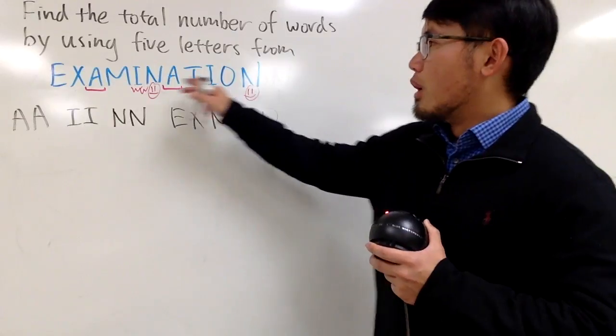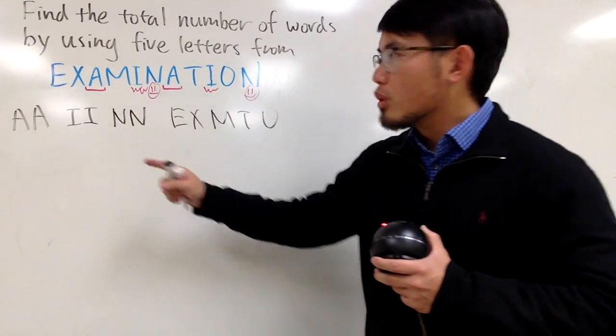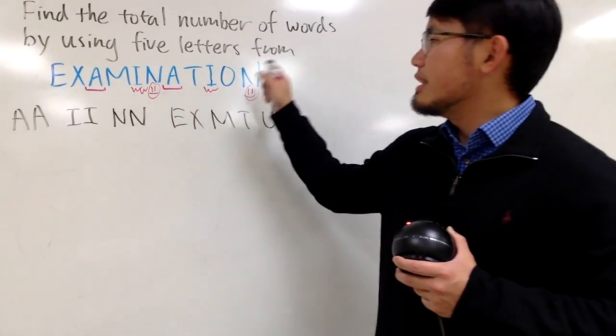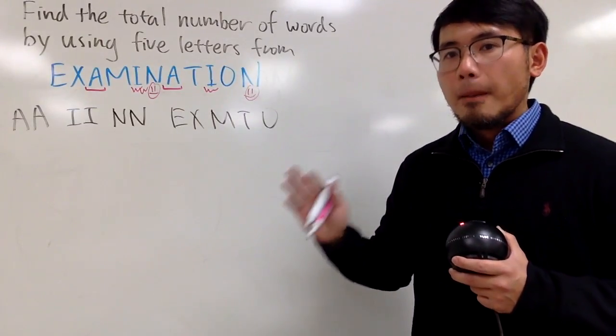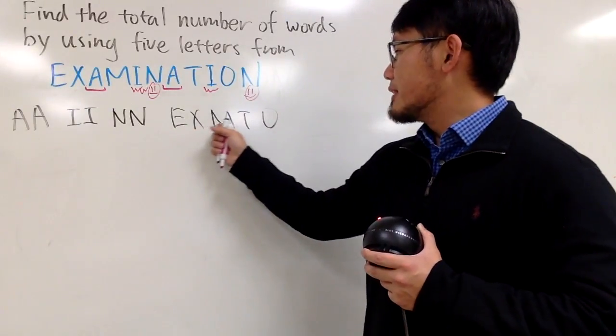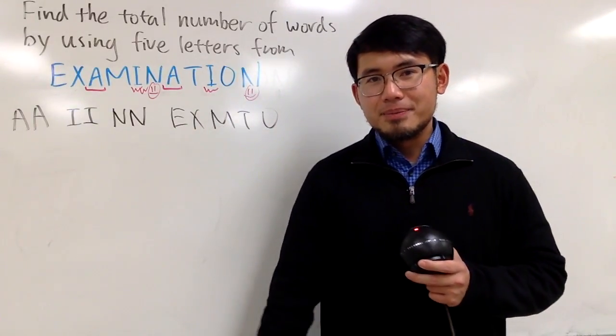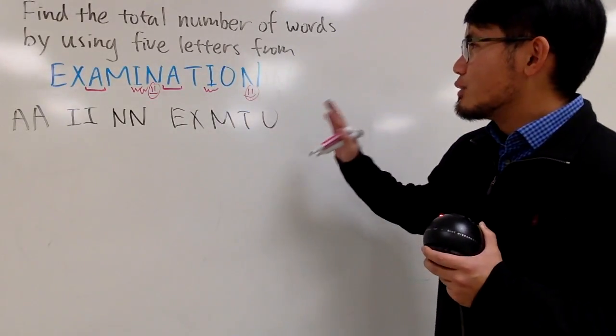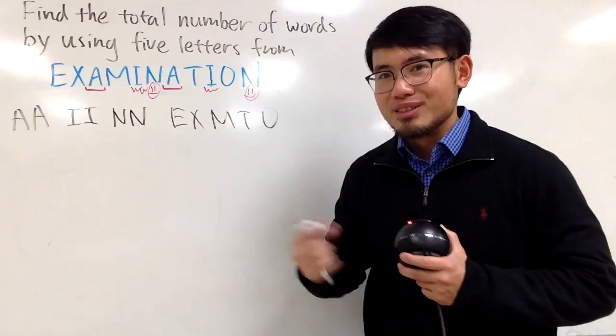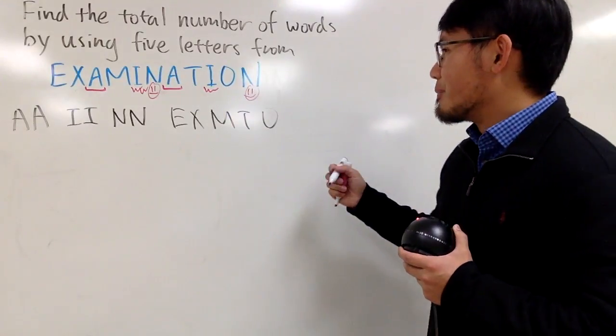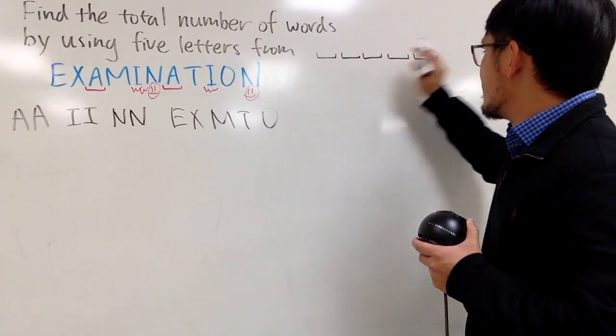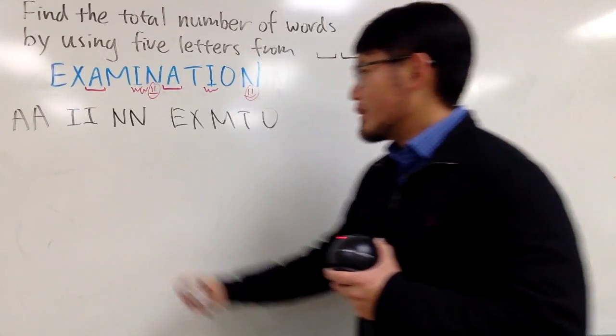So if you look at this word, examination, which has a total of 11 letters. But technically, we only have 8 different letters. And in order for us to construct a word that's only 5 letters from here, we have to consider cases. So here we go. And let me actually just write this down for you guys first. We are going to have 5 slots right here.